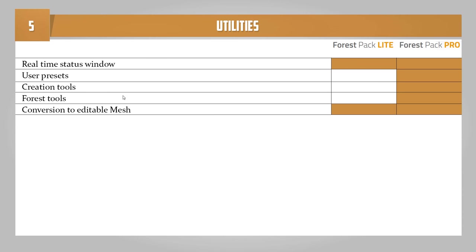Следующий пункт — утилиты, включающие в себя 5 особенностей. Первое: специальное окно для статуса в реальном времени. Второе: пользовательские пресеты. Третье: инструменты для создания. Четвёртое: специальные инструменты ForestTools. Пятое: конвертация Forest Pack объектов в Editable Mesh. Как видно из таблицы, Forest Pack Lite не поддерживает три из этих особенностей.